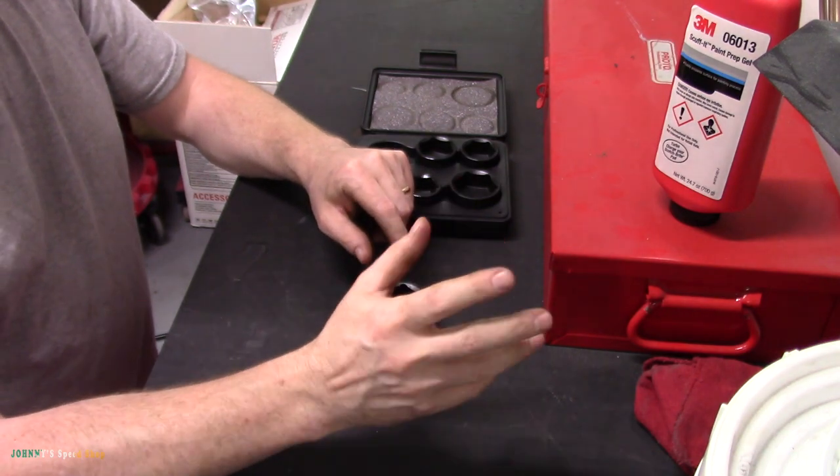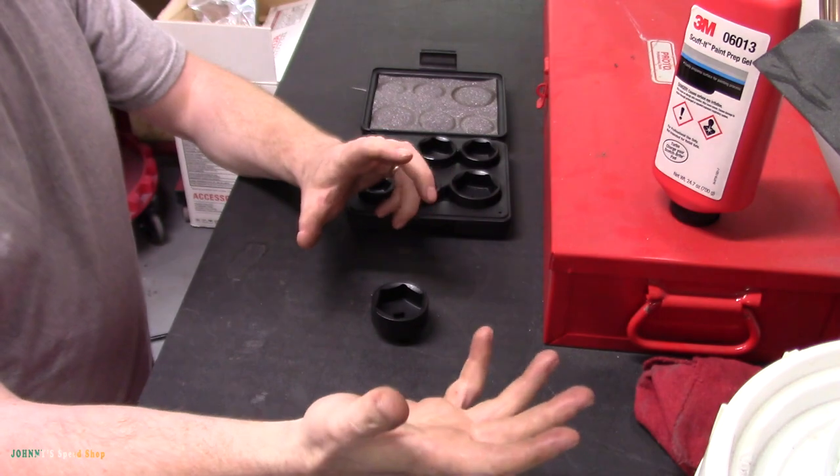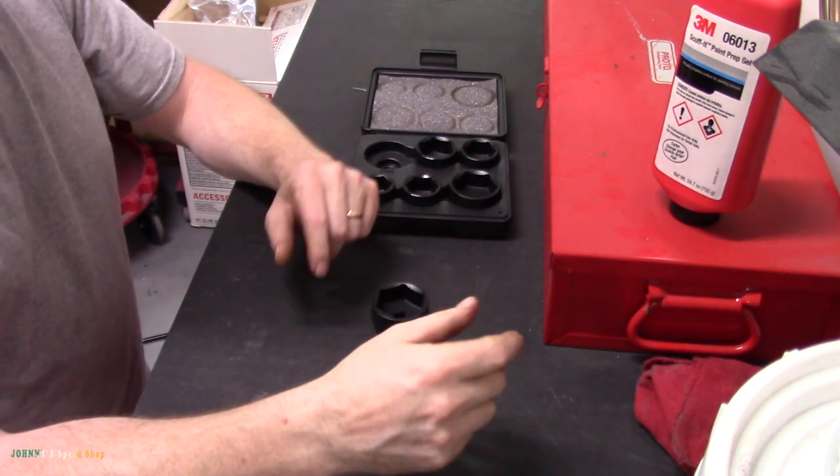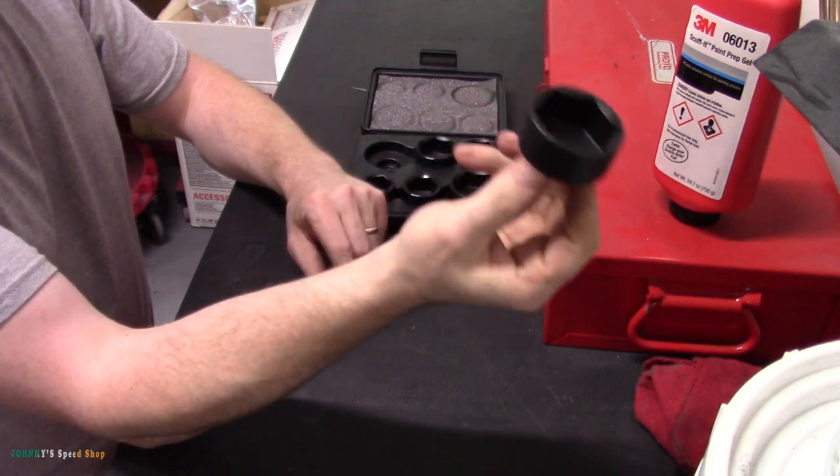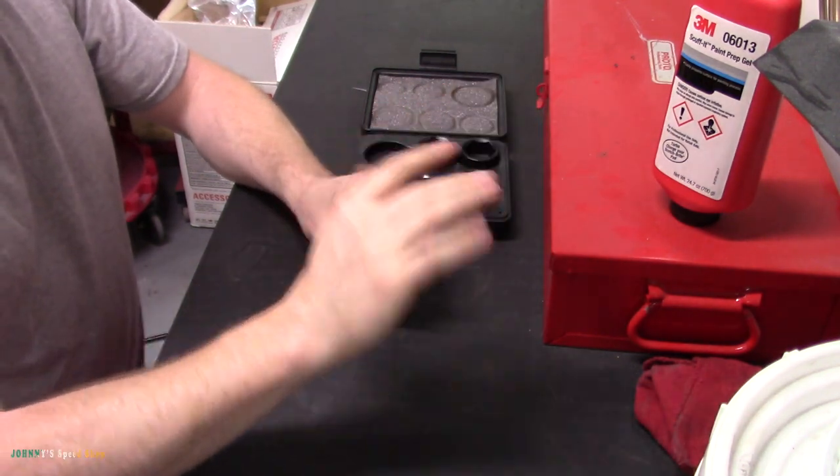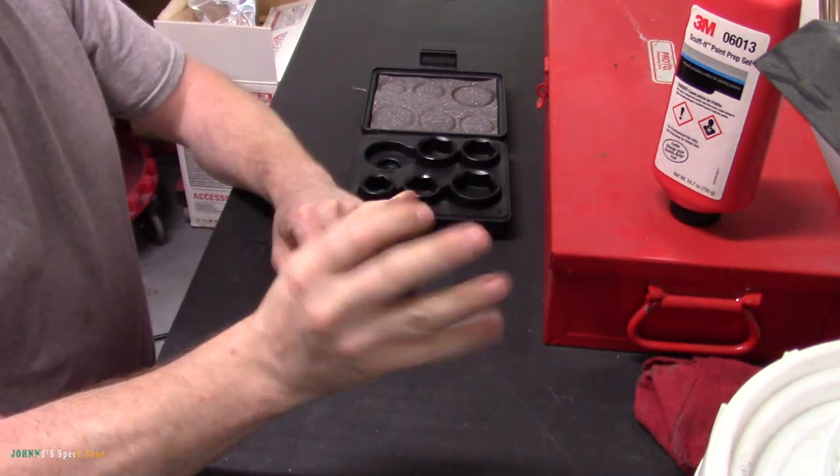You'd only ever get like half a turn and then you had to remove all that stuff because if you kept going you'd back it into the end of the cradle and you'd never get it off. So I bought this set to get this one socket which made that job a hundred times easier. Just push it up with an extension, wind it all the way off, done.